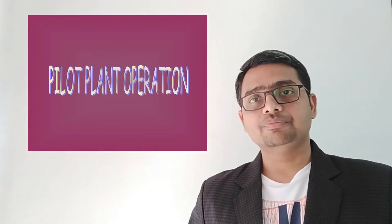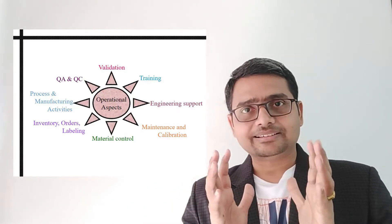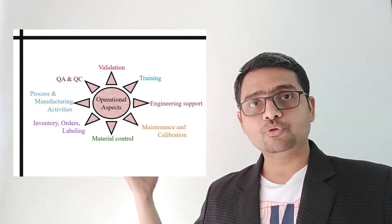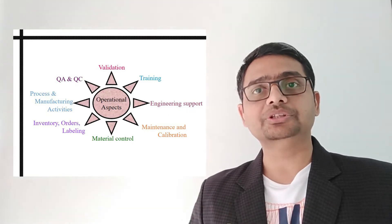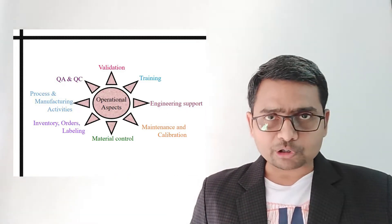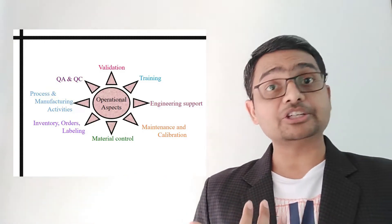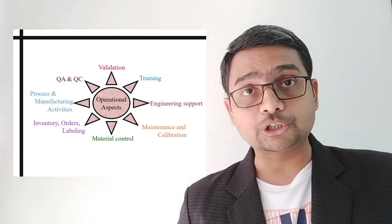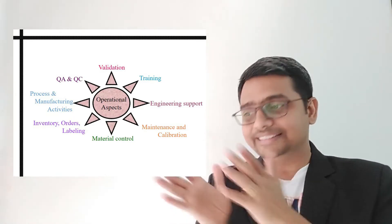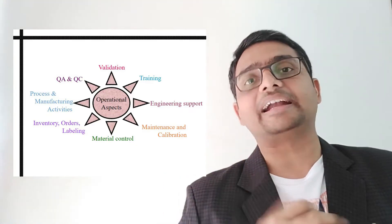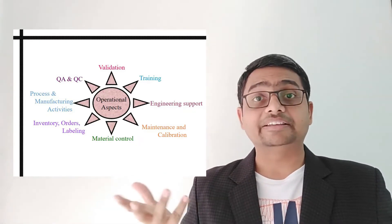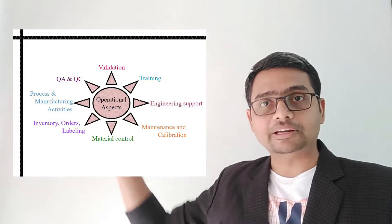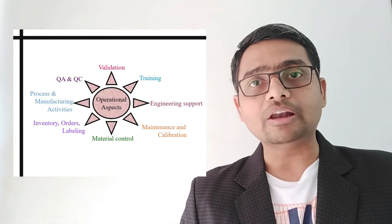Moving forward to the concept of pilot plant operations, there are different areas we have to focus on. The operational aspects include: validation components, training, engineering support, maintenance and calibration, material control and inventory orders with labeling, process and manufacturing activities, and finally, quality assurance and quality control, which should be maintained throughout all operational points.